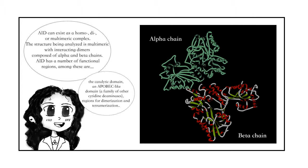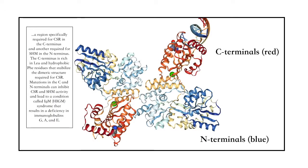Among these are the catalytic domain and APOBEC-like domain, which is a family of other cytidine deaminases that AID belongs to, regions for dimerization and tetramerization, a region specifically required for CSR in the C-terminus and another required for SHM in the N-terminus.